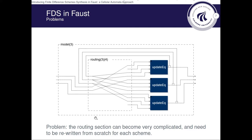Now, the issue is that the routing function can become very complicated for more complex mathematical models, and needs to be rewritten from scratch for each new scheme.